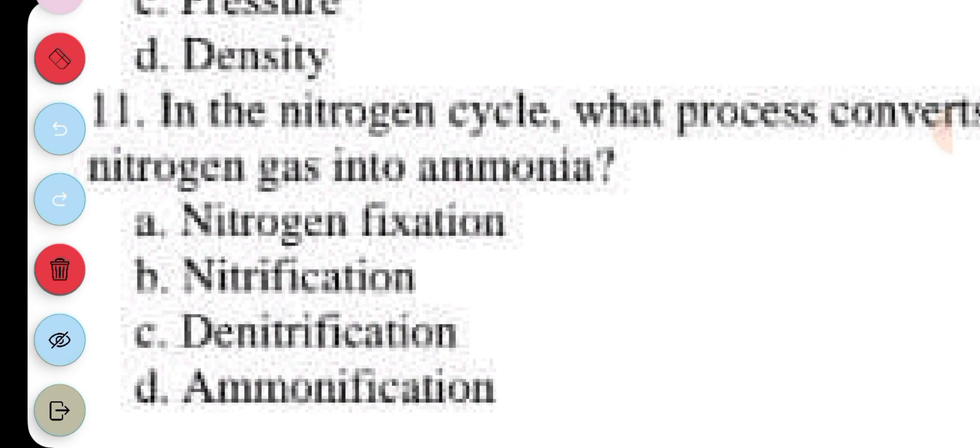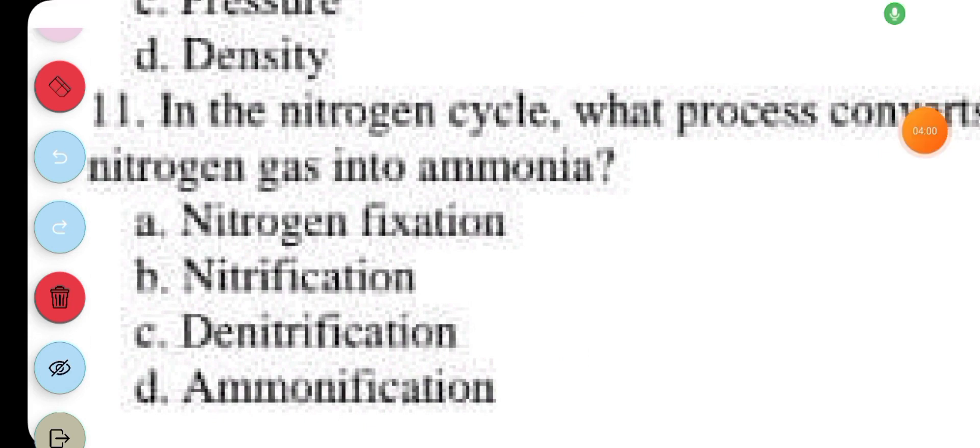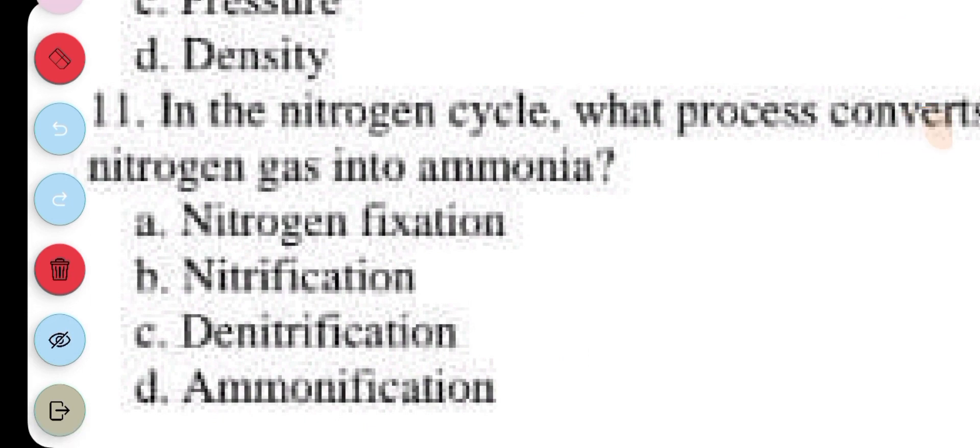Question 11. In the nitrogen cycle, what process converts nitrogen gas into ammonia? A. Nitrogen fixation, B. Nitrification, C. Denitrification, D. Ammonification.